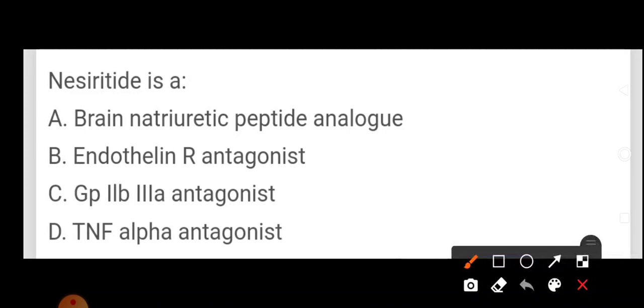Nesiritide is a brain natriuretic peptide analog, endothelin receptor antagonist, GP 2B3A antagonist, TNF alpha antagonist. Answer here is nesiritide is brain natriuretic peptide analog. Remember.